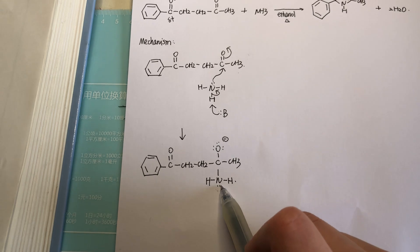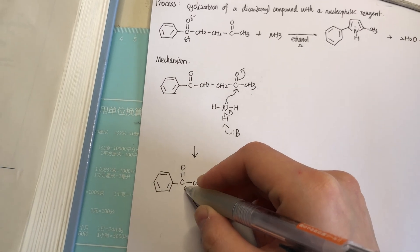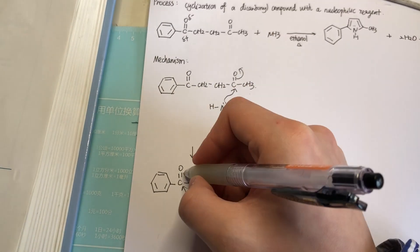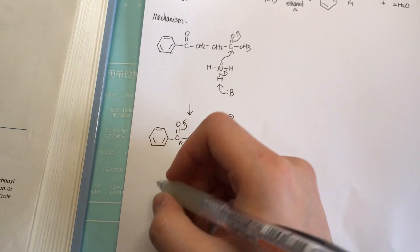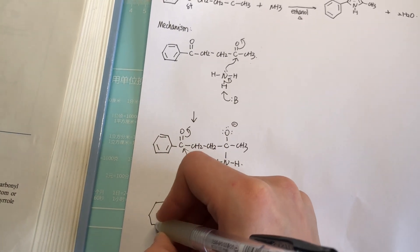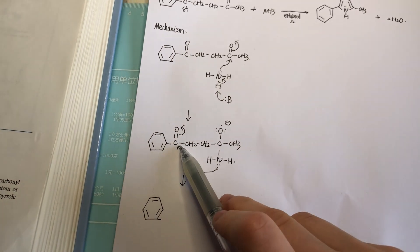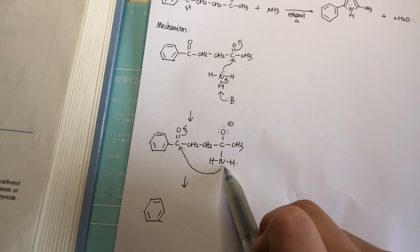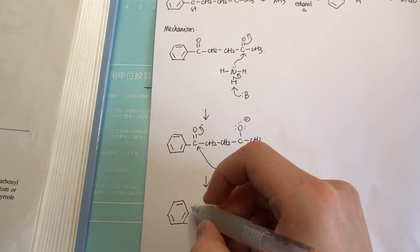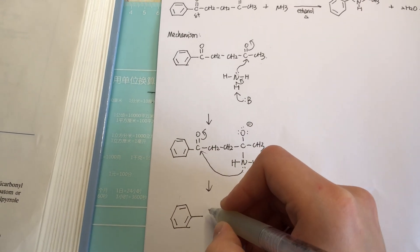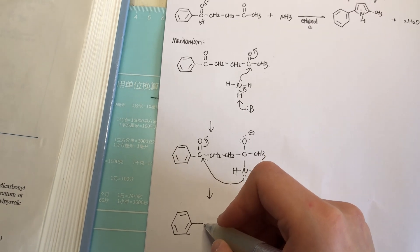It will then undergo a second nucleophilic attack on this carbon here. Now we can obviously see there is a ring structure forming — one, two, three, four, five — five atoms will be involved in a ring. Let's draw it as a ring structure.